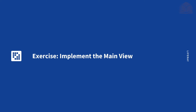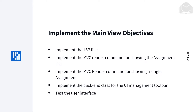In this exercise, we're going to be implementing the main view for our Gradebook application. Our objectives are: we are going to implement the JSP files, we're going to implement the MVC render command for showing the assignment list, we're going to implement an MVC render command for showing a single assignment, we're going to implement the backend class for the UI management toolbar, and finally we're going to test it all out in the user interface.